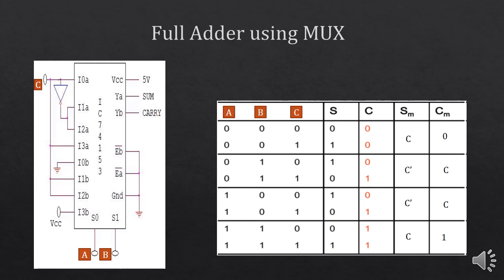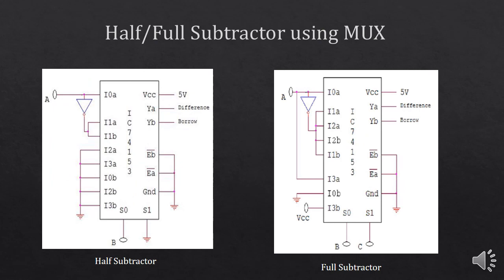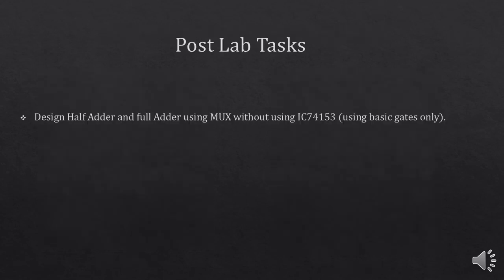In the next lab task you have to implement a half subtractor and full subtractor using multiplexer IC. Follow the same steps used for the half adder and full adder to verify the results. For the post-lab task, design a half adder and full adder using multiplexer with basic gates only to implement the circuit. This is all for the lab. Thank you.